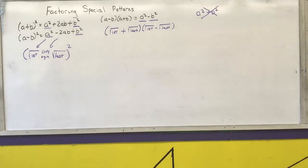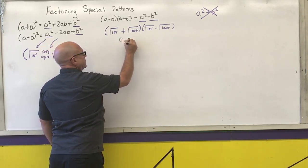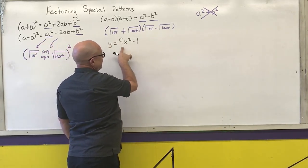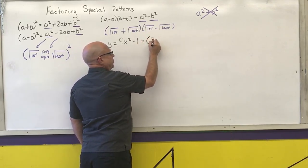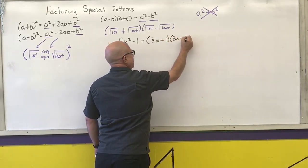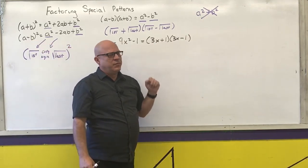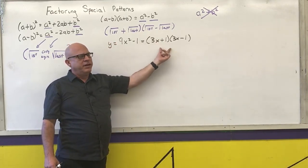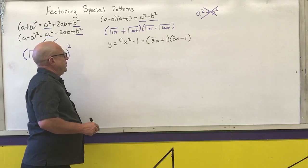The first example is 9x squared minus 1. I want to factor this. Well, 9 is a perfect square, and x squared is a perfect square. So I take the square root of the first plus the square root of the last, times the square root of the first minus the square root of the last. So I have (3x + 1)(3x − 1). And all we are going to do right now is factor, but once you have the factors, you can find your x-intercepts by solving these.